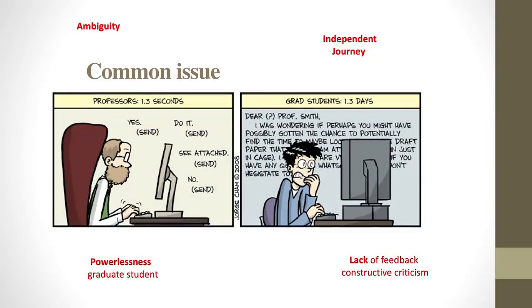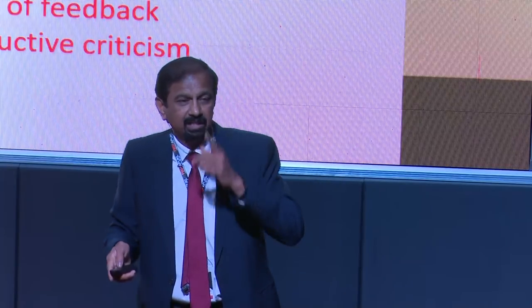Now if you look at this slide, it shows one doctoral student and on the other side the supervisor. If you look at the time the supervisor takes to reply — the email that the student takes about 1.3 days to actually conjure — the supervisor takes 1.3 seconds. What I want to highlight is the area of ambiguity. The student starts with a bit of ambiguity, like someone going through cataracts — seeing everything very blurred. And that's how the student is when they start their PhD. The other part is the independent journey: they are on the journey themselves, walking or running it all by themselves.